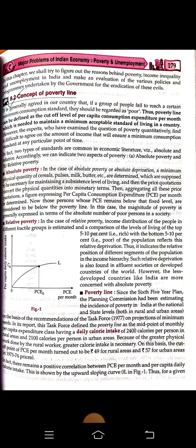Price quotations convert the physical quantities into monetary terms, and then all the prices are aggregated to find a figure of per capita consumption expenditure (PCE) per month. Those persons whose PCE remains below the fixed level are considered to be below the poverty line. The magnitude of poverty is generally expressed in terms of the absolute number of poor people.